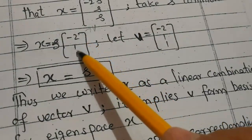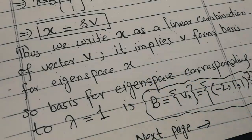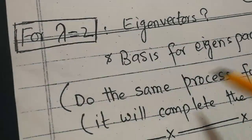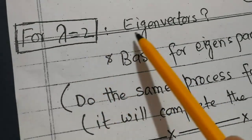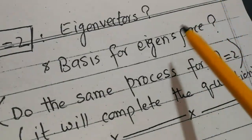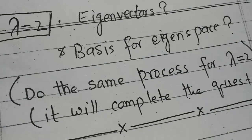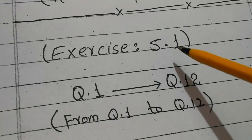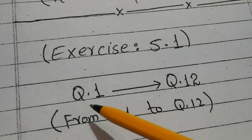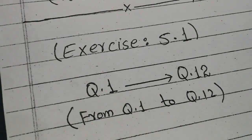So the basis for the eigenspace corresponding to λ = 1 is B = {(−2, 1, 1)}. Similarly, you can find the eigenvectors and the basis for the eigenspace corresponding to λ = 2 — I leave that as an exercise. For further practice, refer to Exercise 5.1 in Elementary Linear Algebra by Howard Anton, questions 1 to 12. Inshallah, in the next video I will discuss another topic. Till then, Allah Hafiz.